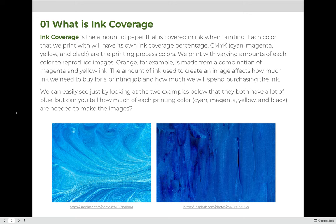We can easily see, just by looking at the two examples below, that both have a lot of blue. But can you tell exactly how much of each printing color — cyan, magenta, yellow, and black — are needed to make these images? There's really no way for us to tell just by looking at the images in this format.